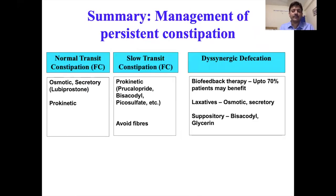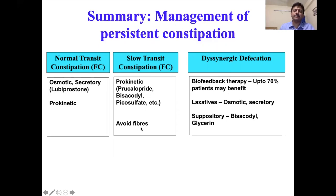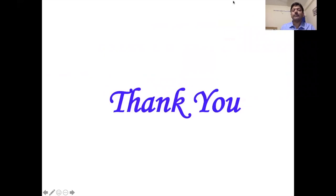In summary, for dyssynergic defecation, the treatment of choice is biofeedback therapy along with laxatives to soften stool; suppositories may also be helpful since the problem is mainly in the anorectal area. For slow transit constipation, a prokinetic like prucalopride or stimulants like bisacodyl or sodium picosulfate are preferred; importantly, fibers should be avoided as they may worsen symptoms. For normal transit constipation, osmotic laxatives, secretory drugs, or prokinetics can all be used.